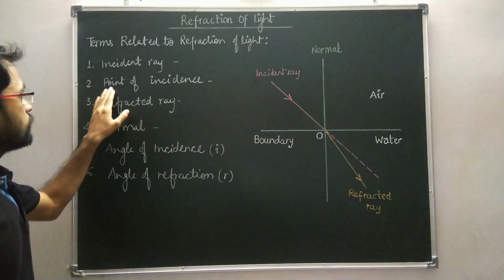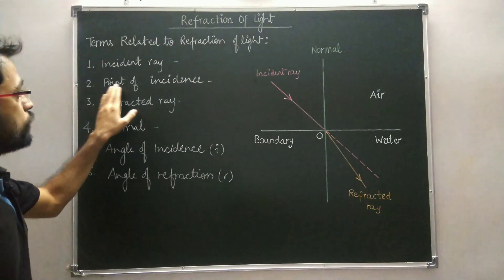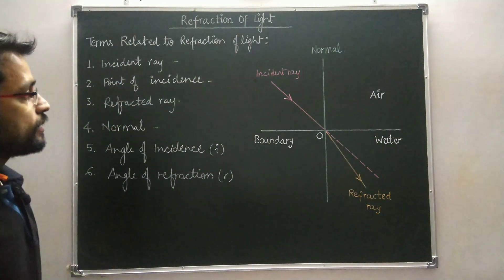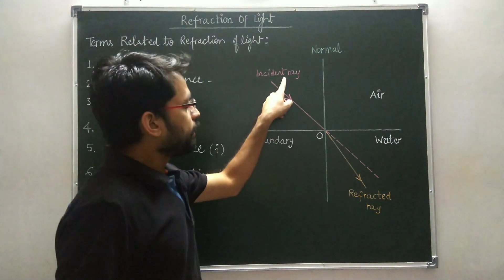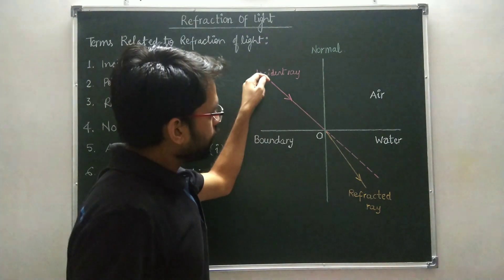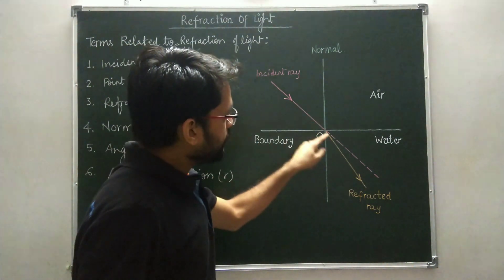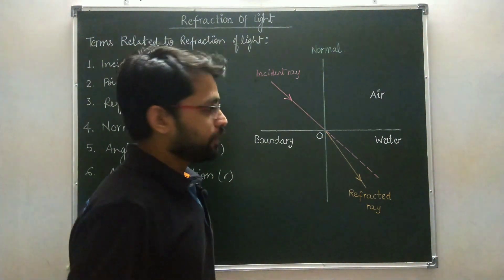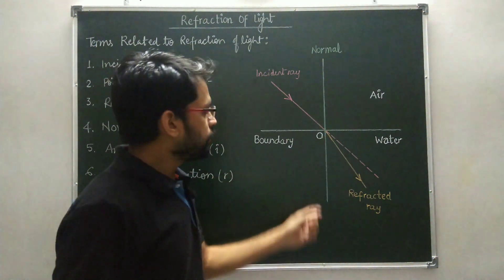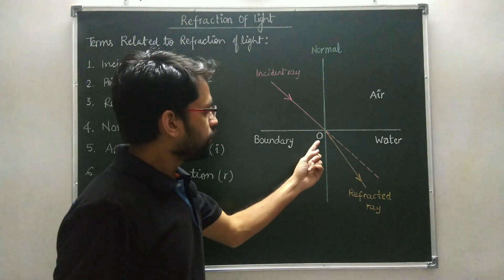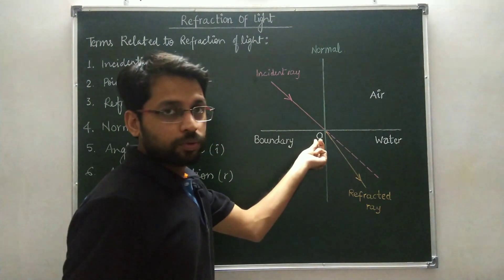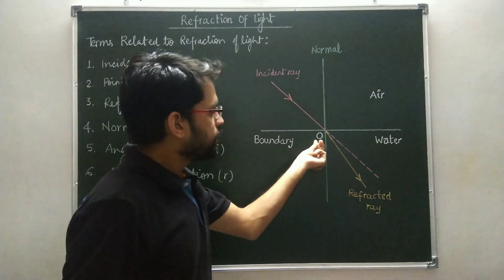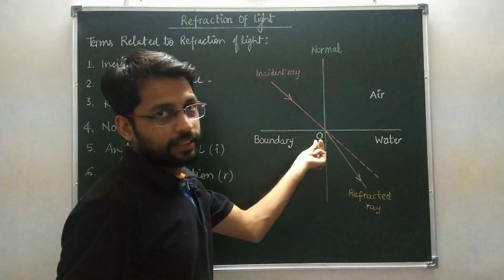The second term is point of incidence. The incident ray is incident at a point on the boundary. Here, this point is O. So O is the point of incidence.